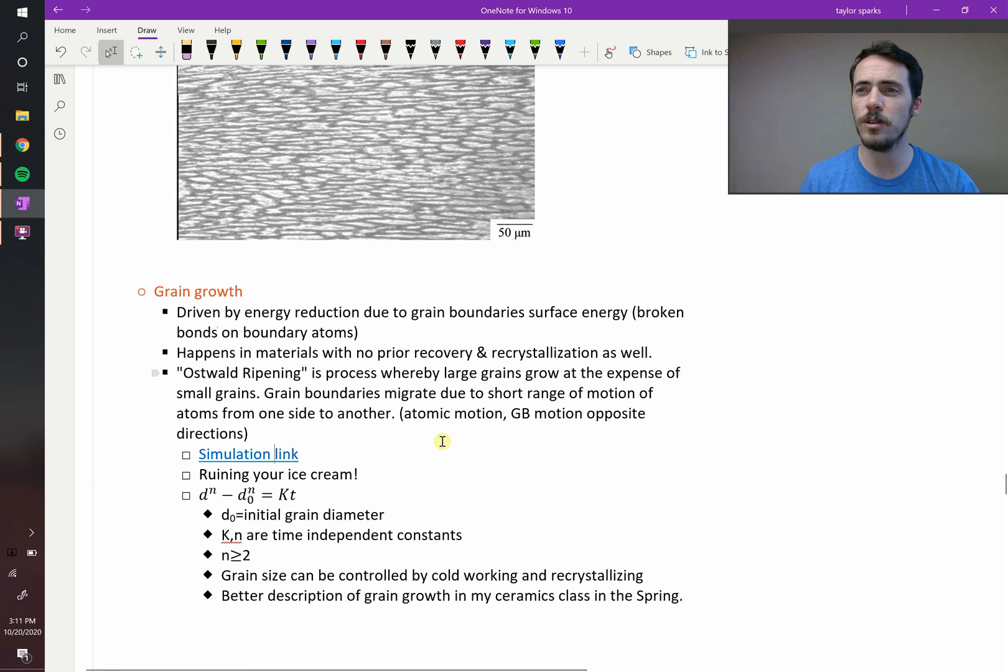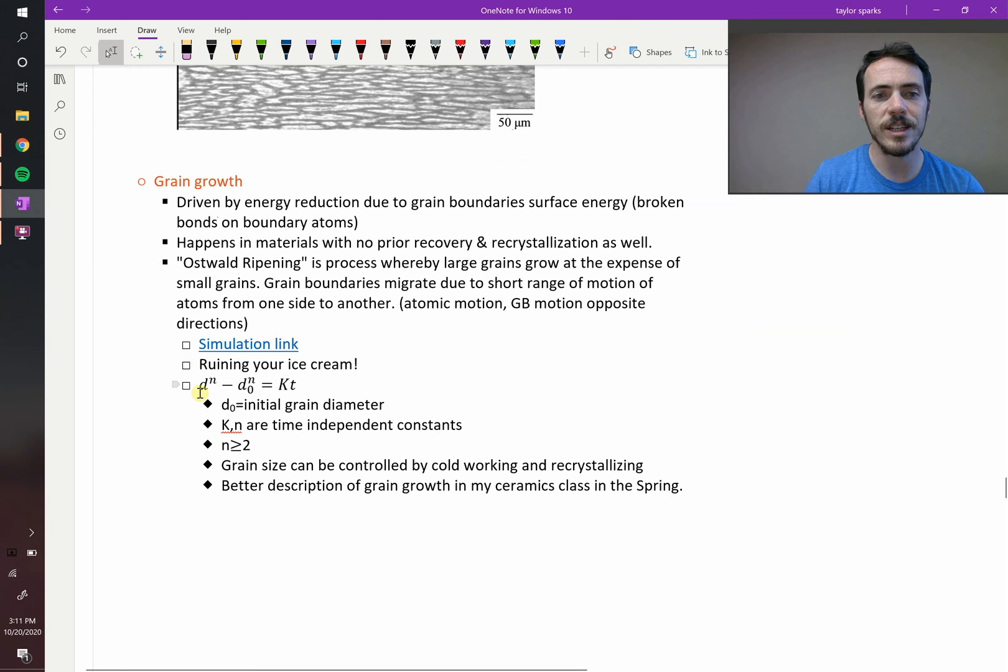There is some expressions that you can use to simulate grain growth. So d to the n, that's your grain size to some exponent, it's a constant for your material. Minus d0 to the n. d0 will be your initial grain size. d0 equals k, another constant, times temperature. So if you knew the constants k and n and your initial grain size, then if we held it in a furnace at some temperature for a time t, then you could figure out what your final grain size would be. Therefore, k and n are time-independent constants, but they are definitely temperature-dependent. If you go to a higher temperature, there's no reason to believe that the k and n won't change. They're going to change as well. n is typically a number greater than 2.